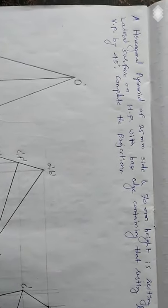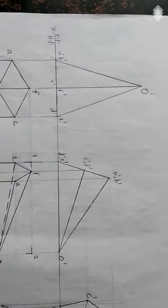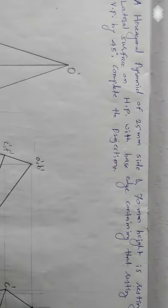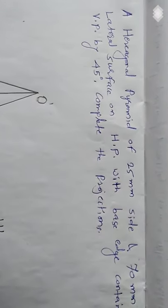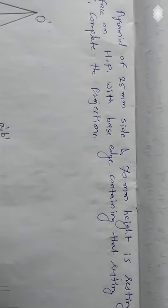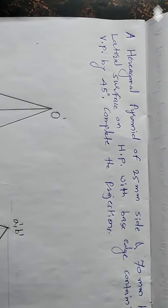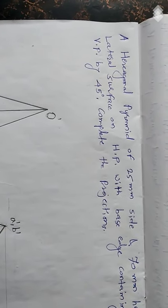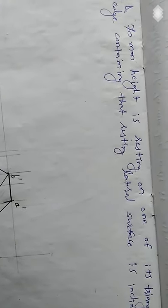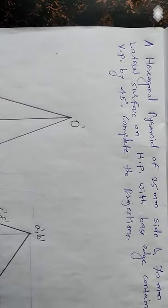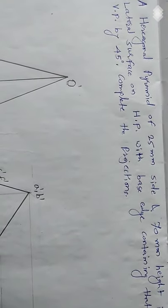Hello friends, another example of projection of solids we are going to solve today. Let's have a look at its narration: a hexagonal pyramid of 25mm side and 70mm height is resting on one of its triangular lateral surfaces on the horizontal plane, with the base edge containing that resting lateral surface inclined to the vertical plane by 45 degrees.